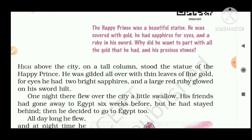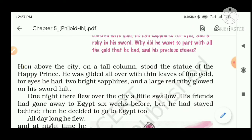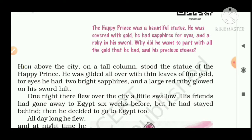So let us discuss The Happy Prince. The happy prince was a beautiful statue. He was covered with gold and he had sapphires for eyes and a ruby in his sword. The prince is called happy because once when he was alive, he lived in a peaceful palace and he did not know the meaning of sorrow, pain, or miseries in life. He did not know exactly the sadness of death. So he used to live a very luxurious and happy life in his palace.